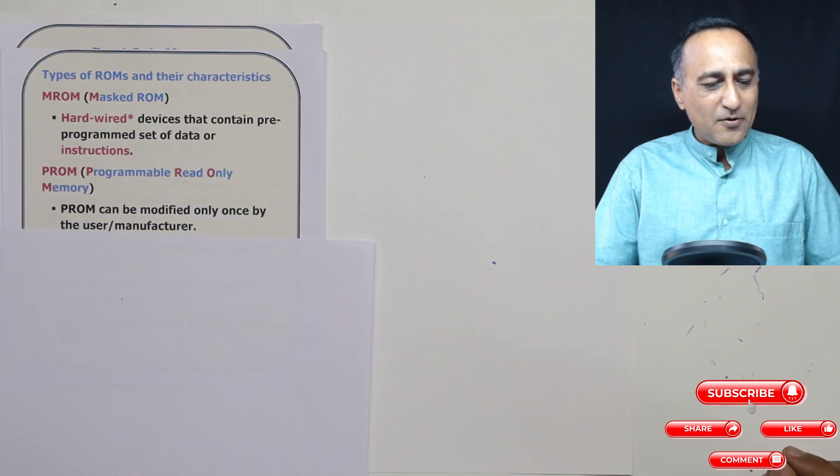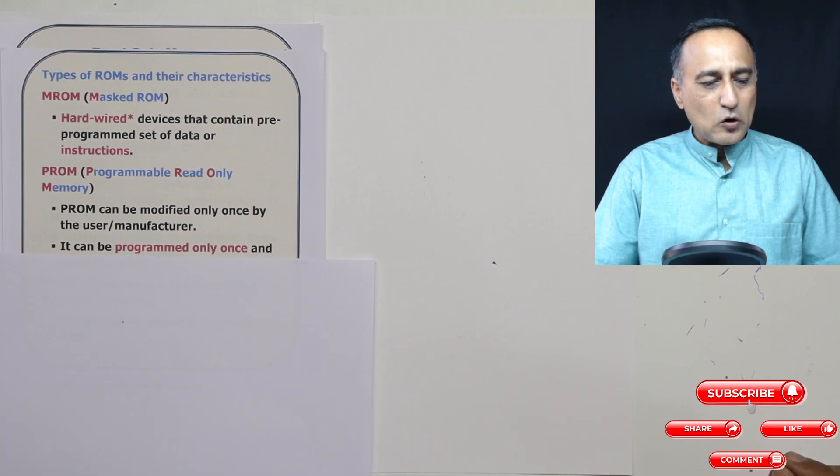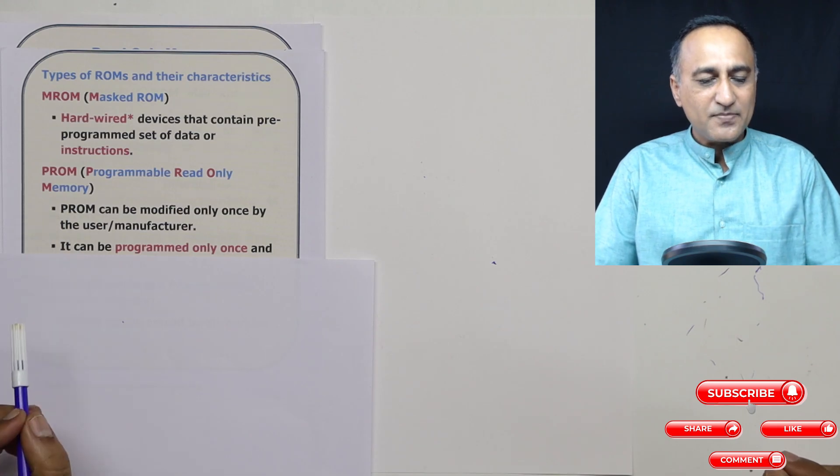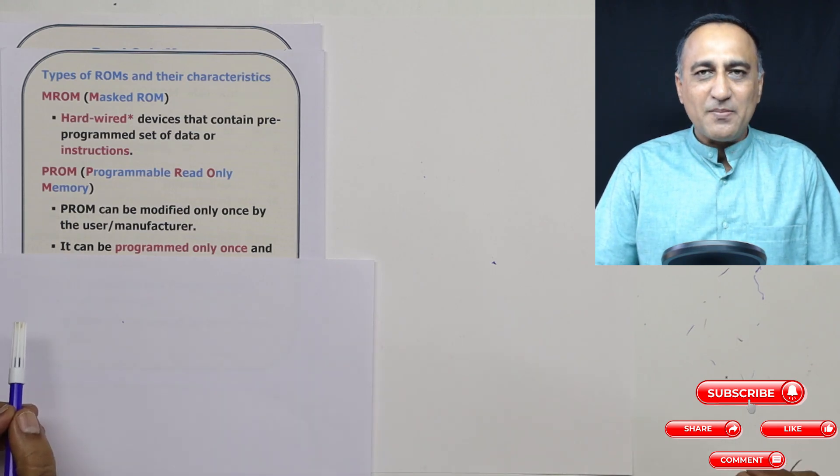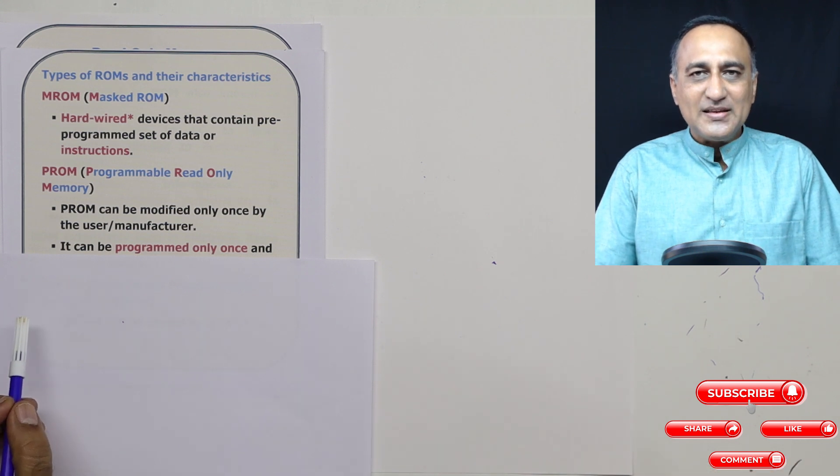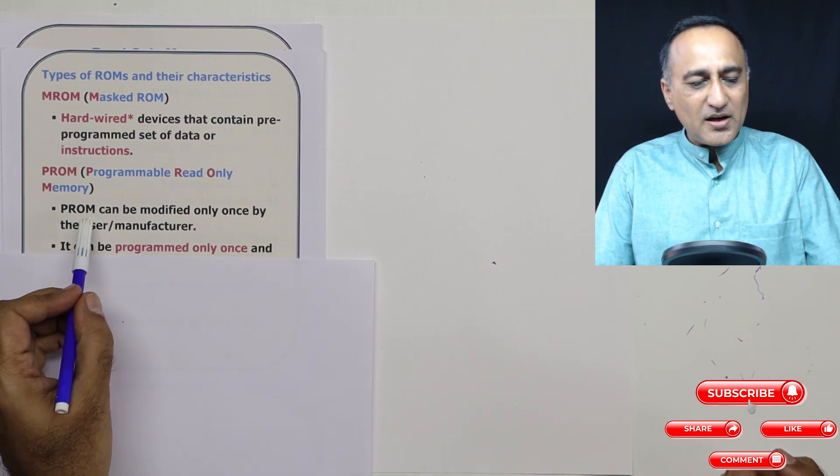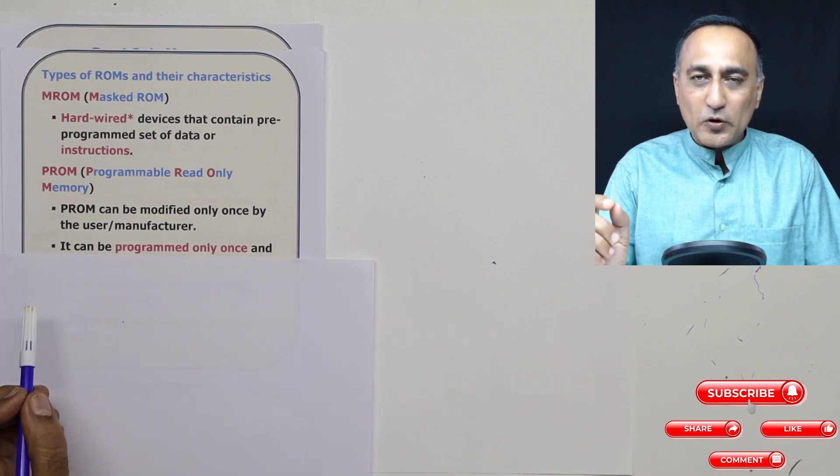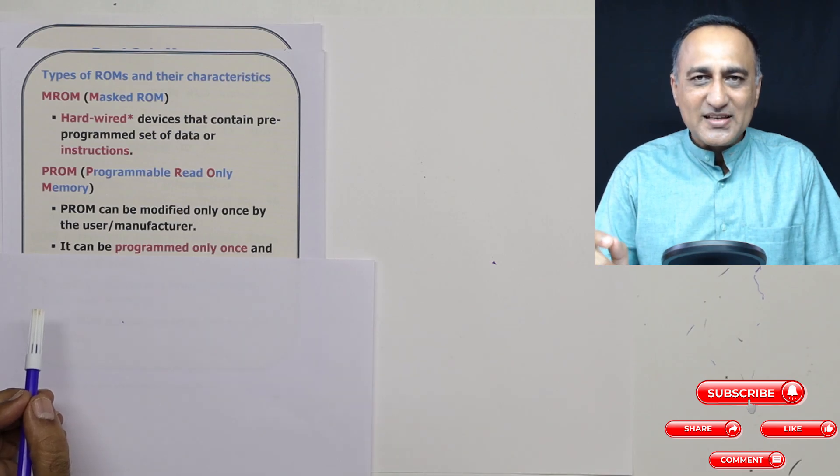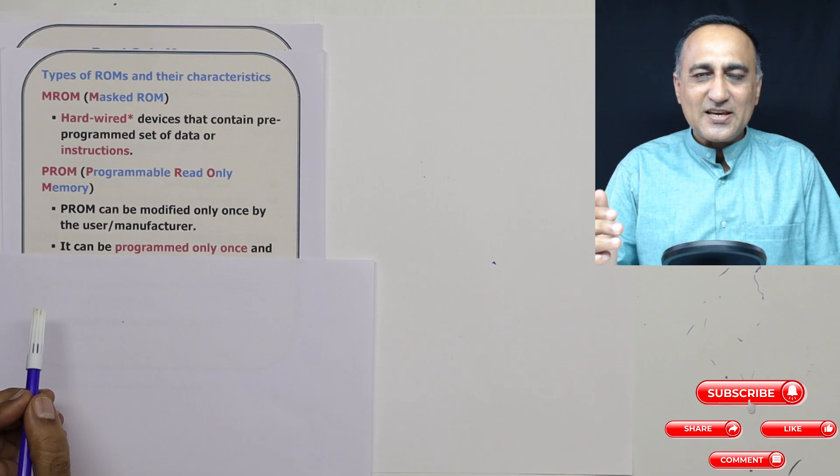Now let's look at the second type of ROM. The second type is PROM, which stands for programmable read only memory. In this type of memory, suppose you get a ROM chip, it is a blank chip. That blank chip you can modify or program once. The programming is done using electrical or ultraviolet signals.